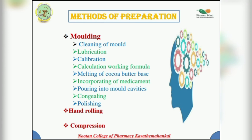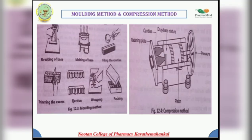The compression method: suppositories can be made by a cold compression process. The pharmacist must calibrate the mold cavities of the compression machine by preparing and weighing blank suppositories. Suppositories are prepared by mixing the powdered medicament with cold-grade cocoa butter. The molding method uses molds usually made of aluminum, brass, nickel-copper alloy, typically plated with nickel and chrome.